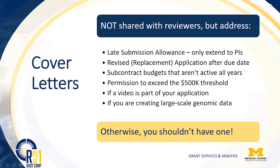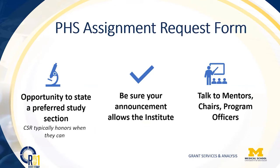What you do want to make sure you're looking at and using in the 424 form set is the PHS Assignment Request Form. This is where historically we've done it in the cover letter, but it is now its own separate form in the application set. You want to list there any particular study section that you would like to request your application be sent to. The Center for Scientific Review will evaluate that, and if they can accommodate, they will send it forward to that study section. This is something you might want to talk to your mentors about — give a call to a program officer to see if they're interested in the type of research you're doing, and that way you can help guide it to the right study section for review.